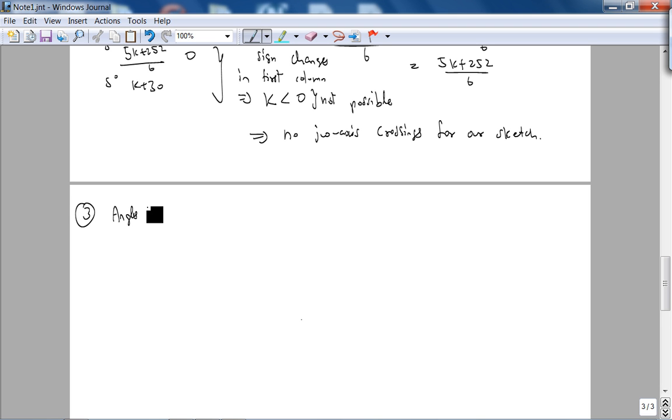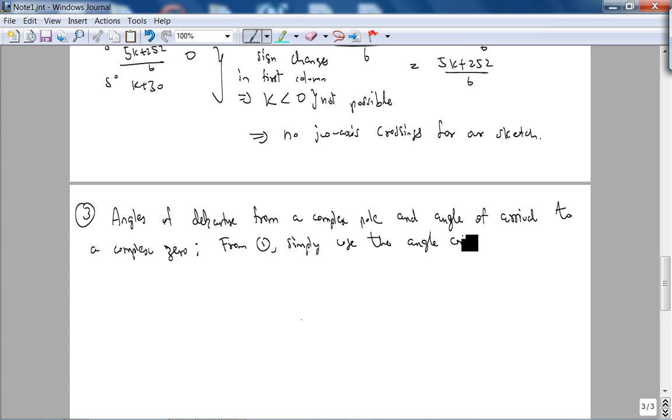The final criterion for us is going to be angles of departure from a complex pole and angle of arrival to a complex zero. The justification is that from one, simply use the angle criterion. For us, for our example, we don't have any complex poles or zeros, complex conjugates, so let's look at example 8.6 on page 409. It's a solved example from your book.